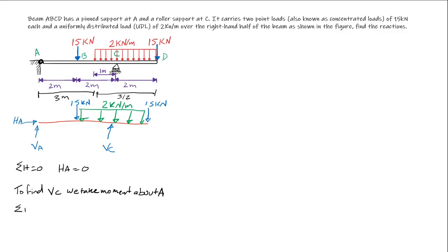The sum of moment at A must equal zero, and also we have to remember the notations: clockwise is positive, anti-clockwise is negative, upward positive, downward negative. 15 kilonewton since acting downward, therefore plus 15 times the distance 2 meters from A, minus VC multiplied by the distance which is 4 meters because it's acting anti-clockwise, it's negative.